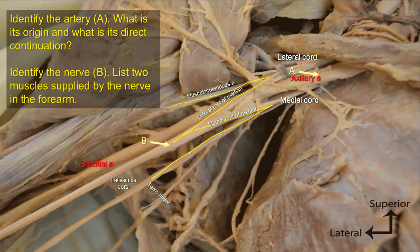The ulnar nerve is located medially because it arises from the medial cord of the brachial plexus, as its terminal branch. The limbs of the M are terminal branches of the lateral and medial cords: the lateral cord gives the musculocutaneous nerve and the lateral root of the median nerve; the medial cord gives the ulnar nerve and the medial root of the median nerve. Nerve B is the median nerve.